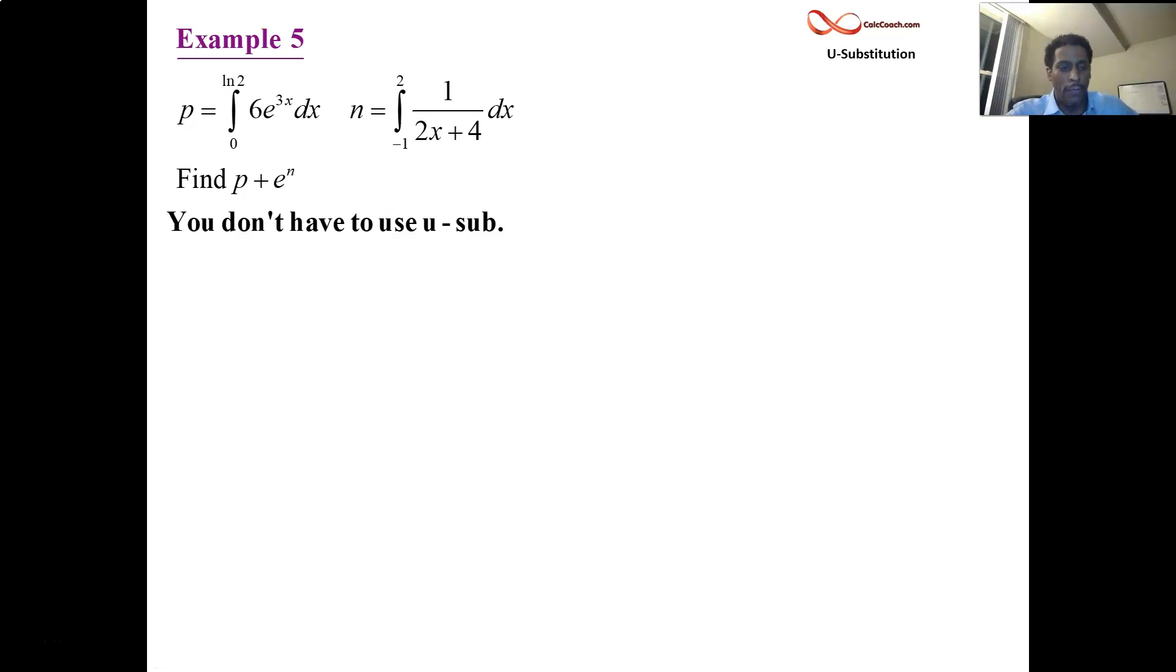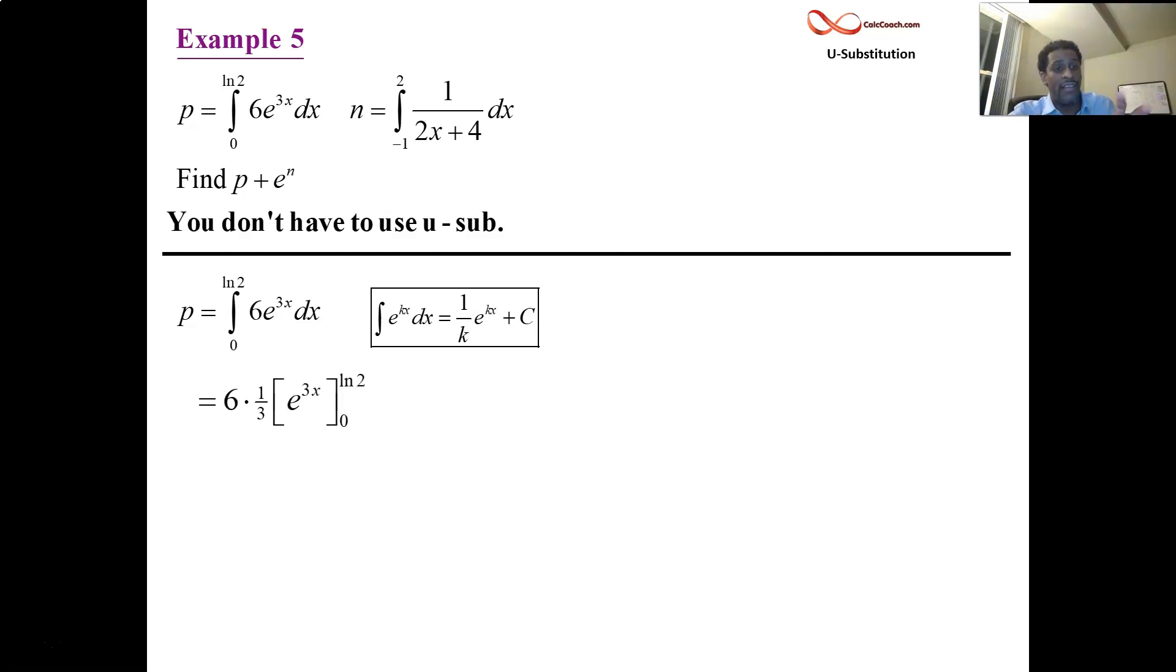And so what function has e to the three x as its derivative? One over three e to the three x. You don't have to do u-sub for that. The multiplier comes out as a reciprocal. Now you have the six who's already there. And then the one over three comes out. So it's going to be two on the outside.